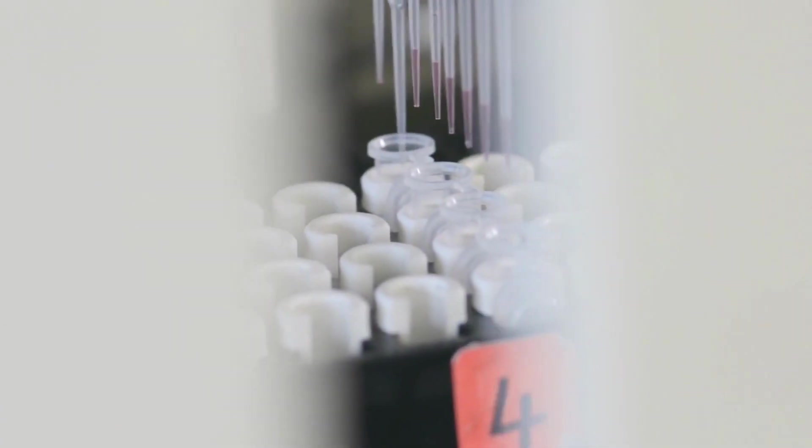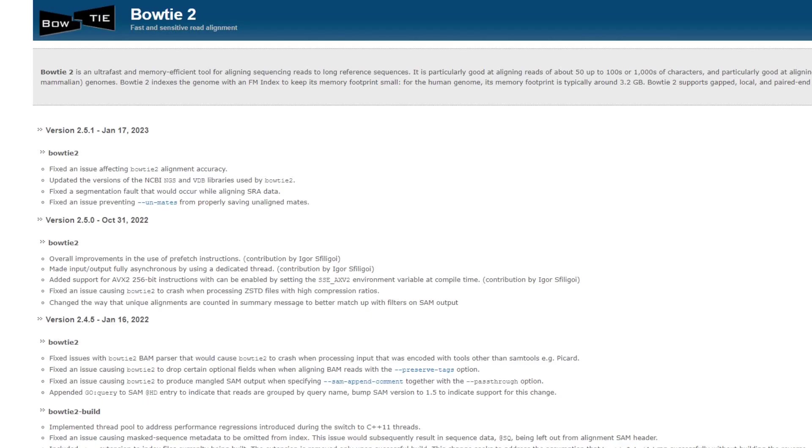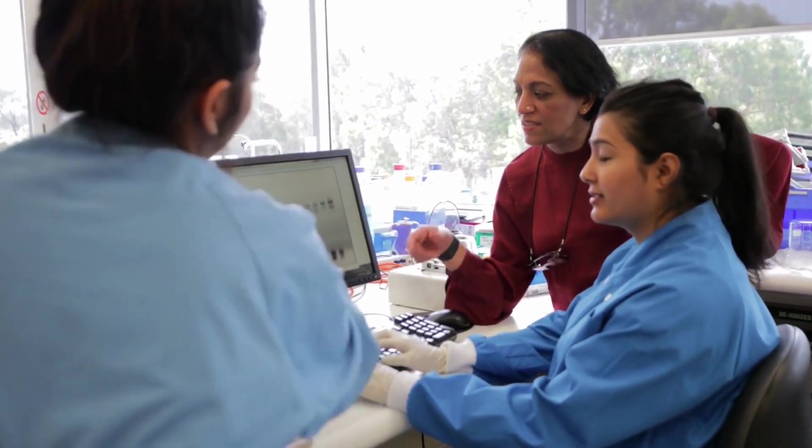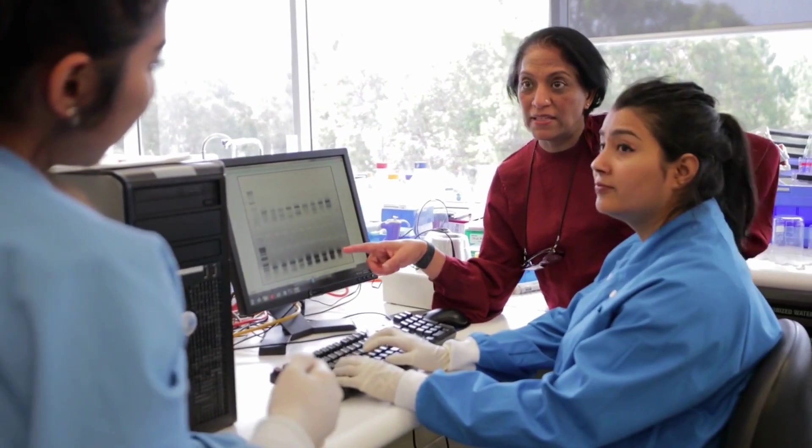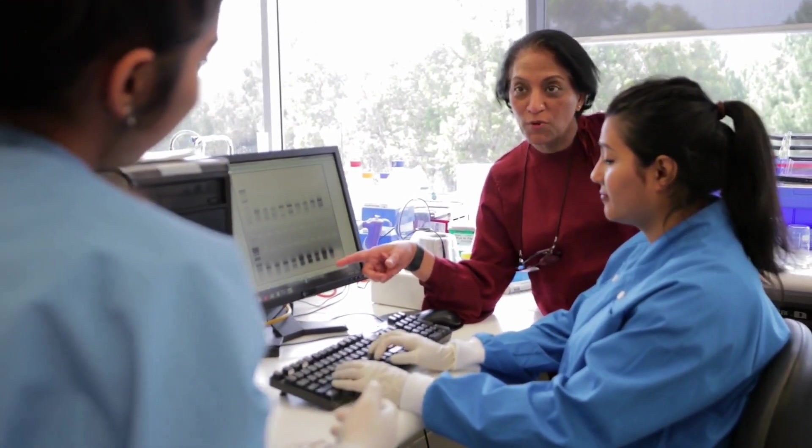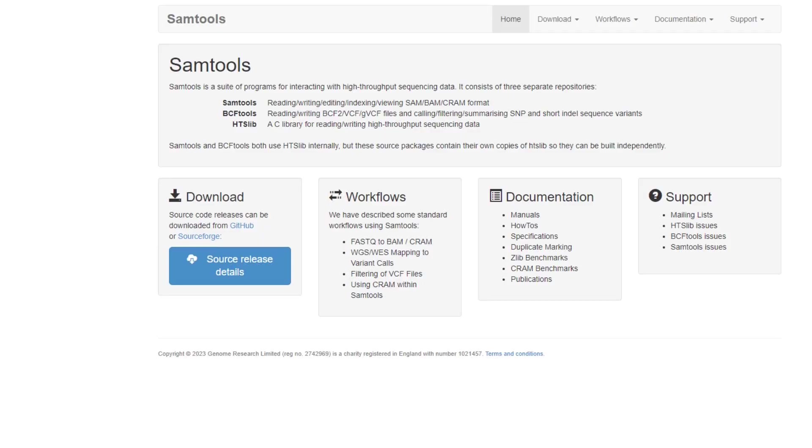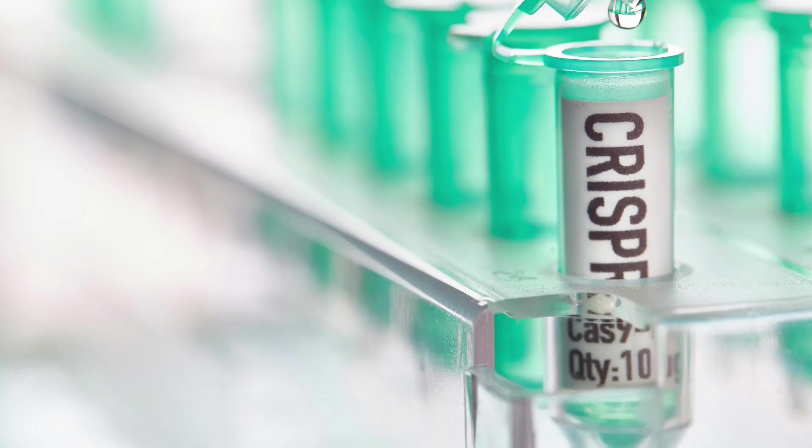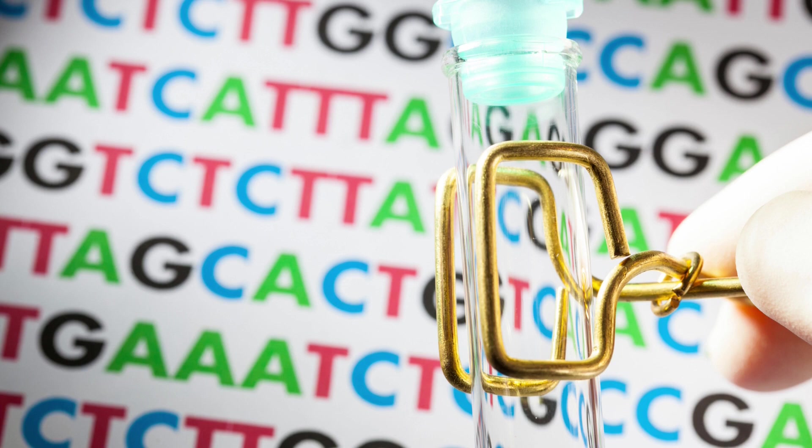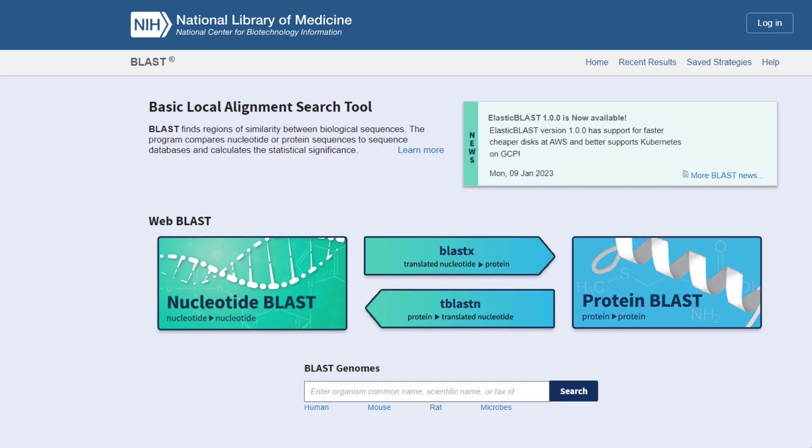Number 5: Bowtie 2. This software is a fast and efficient tool for aligning short reads to reference genomes. It is widely used for mapping next-generation sequencing data. Number 6: SAM tools. This is a widely used tool for processing and analyzing DNA sequencing data. It is particularly useful for identifying genetic variants and mutations.